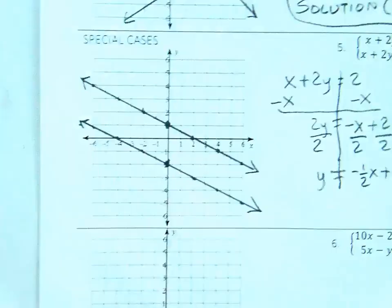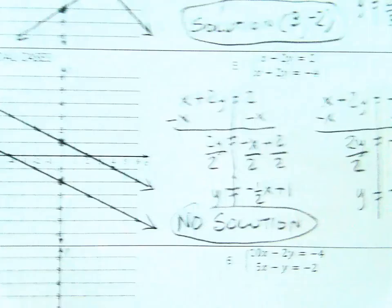These lines are parallel, that means they will never intersect and there will never be a solution. There is no place where these two lines have the same solution, so there is no solution to the system of equations. They are parallel.